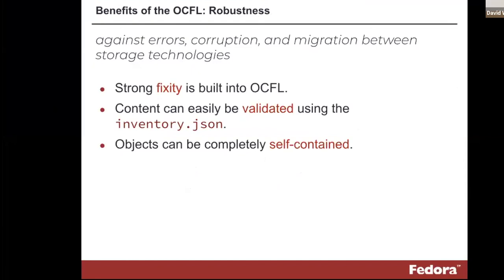Robustness here is largely in the sense of fixity — being able to guard against corruption. OCFL has a very strong sense of fixity built into it. There are inventory files that lay out all of the content and all the checksums, so you can validate the contents of an object with reference to this inventory file. The objects themselves are intended to be self-contained.